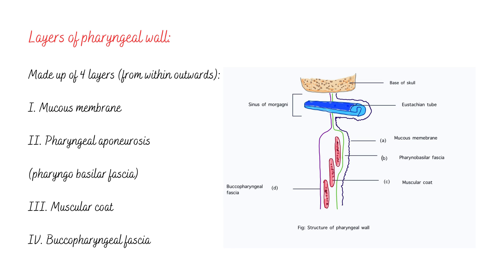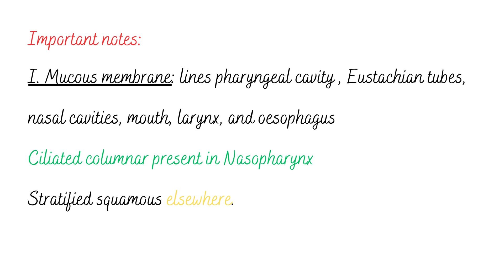The sinus of Morgagni will be discussed in the next video — this is very important as many exam questions come from this topic. The mucous membrane lines the pharyngeal cavity, eustachian tubes, nasal cavities, mouth, larynx, and esophagus. On histopathological examination, ciliated columnar epithelium is present only in the nasopharynx, but in other parts we can see stratified squamous epithelium.